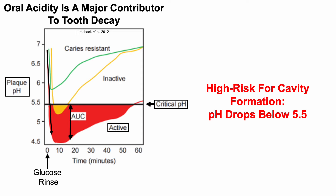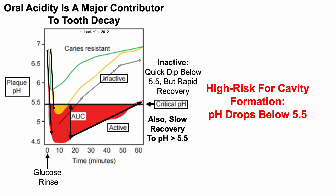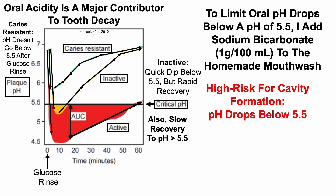The person with active cavity formation also has a slow recovery above pH 5.5. In contrast, for the person with inactive cavity formation, there's a small dip below 5.5 but then rapid recovery. For the person resistant to cavity formation, after the glucose rinse the plaque pH never approaches 5.5, dropping from about 6.8 to 6.0 and recovering quickly.